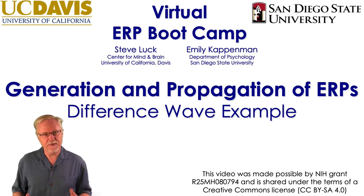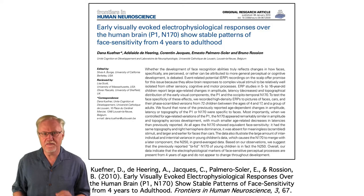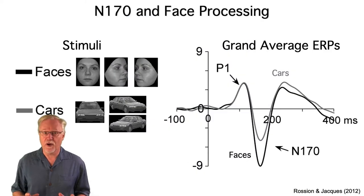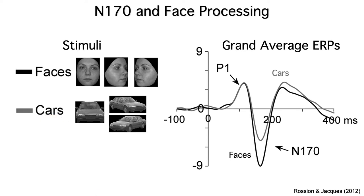Now that we've discussed the logic behind difference waves, let's look at an example. Here's an N170 study by Kufner et al., where they wanted to use the N170 component to study the development of face processing from childhood through early adulthood. This required making face minus non-face difference waves. But the overall N170 for faces reflects a sum of many different ERP components, some of which are face-specific and some of which are present for both faces and other kinds of objects.